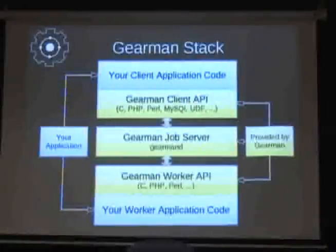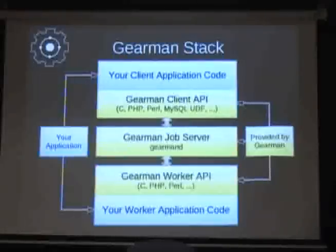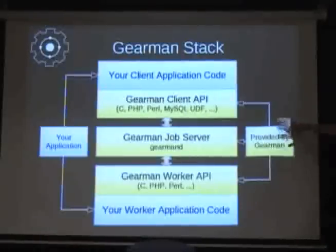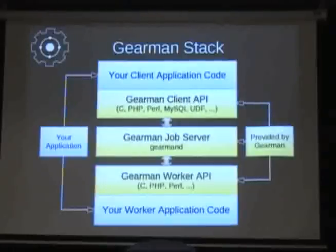In the case of converting images for a blog site, you'd toss an image in with some command-line options saying convert this to a new size, and the worker would take that image and write it into a database entry. Your basic Gearman application stack has Gearman providing all the infrastructure in the middle — you're just writing a little bit of application code on the client and the worker side. You say 'here, I want this done,' and all the network protocols and APIs are taken care of for you.